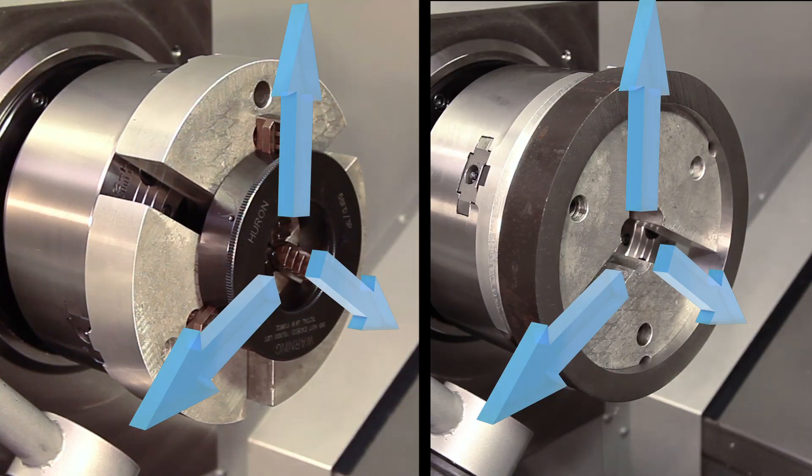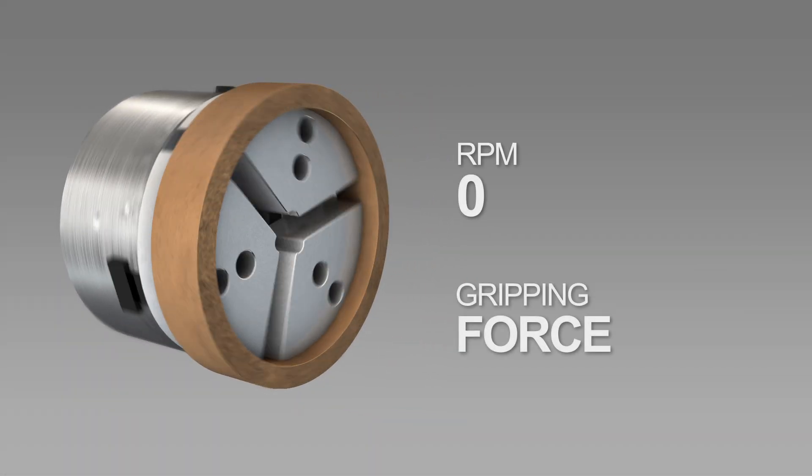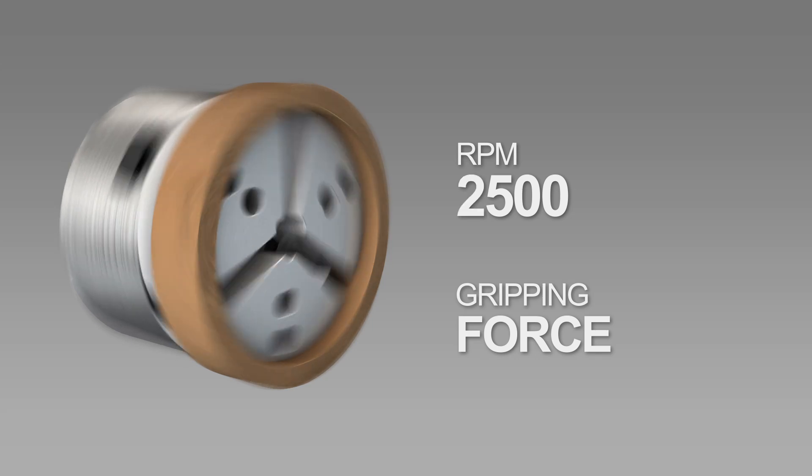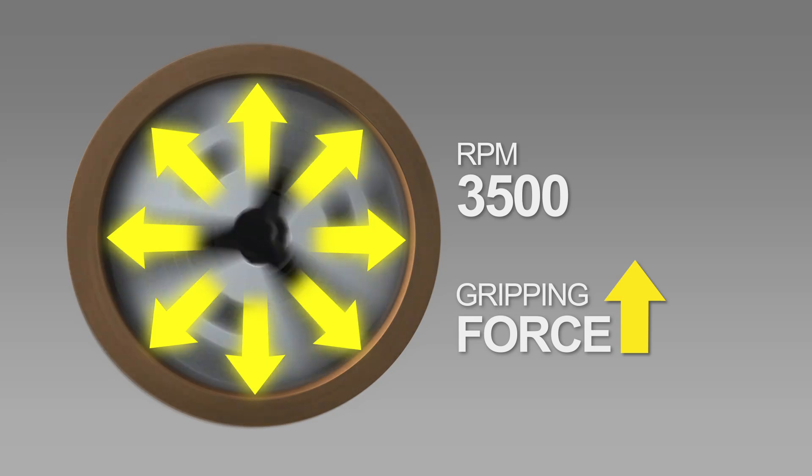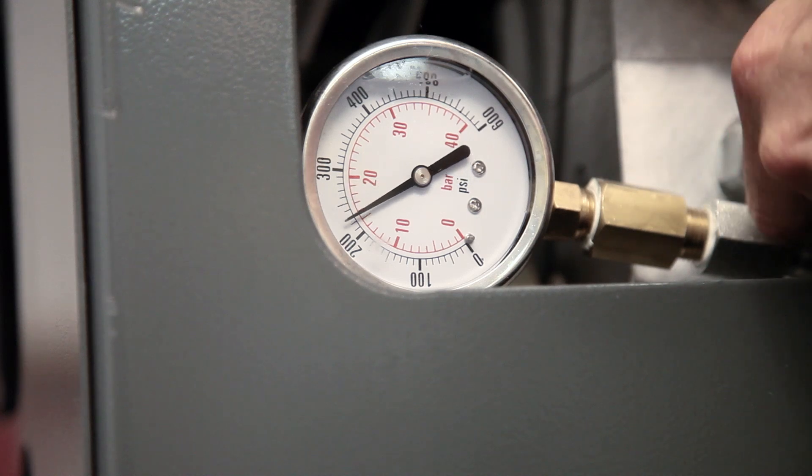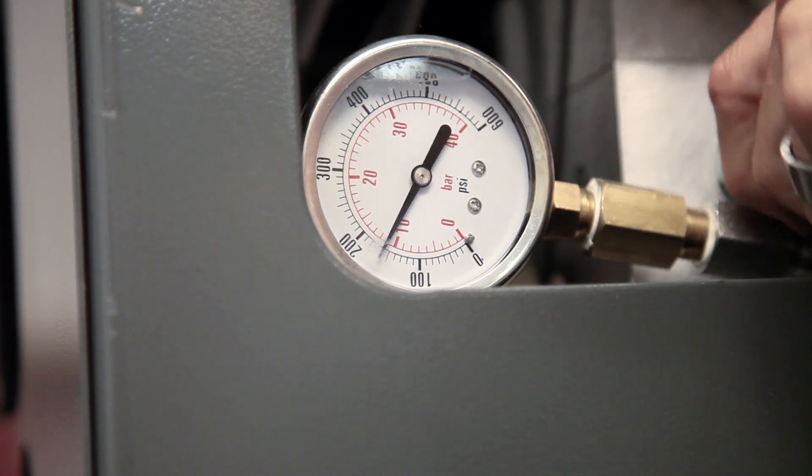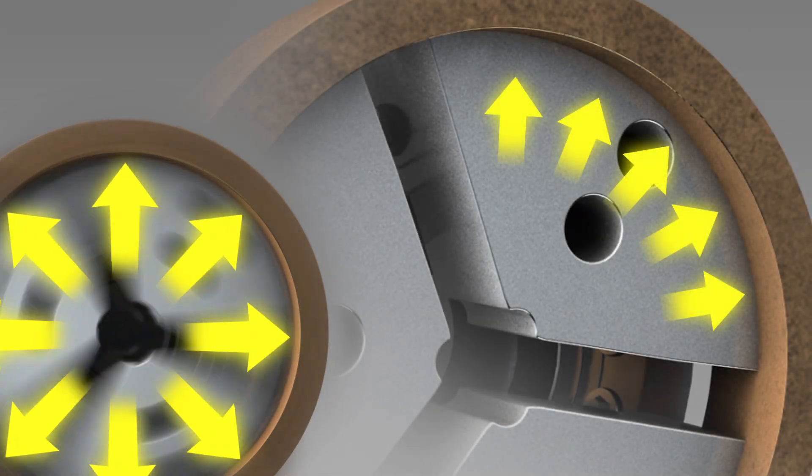Take special note of how fast the spindle will be rotating during actual part machining. As speeds increase over 1000 RPM, centrifugal force acting on the jaws will begin to significantly increase gripping force as the jaws are forced outward. Chuck pressure may need to be reduced to compensate for this added force. This is another reason to consider using pie jaws. With pie jaws, the additional centrifugal jaw pressure will be spread evenly over the internal surface of the part.